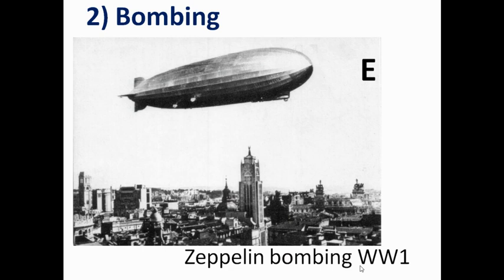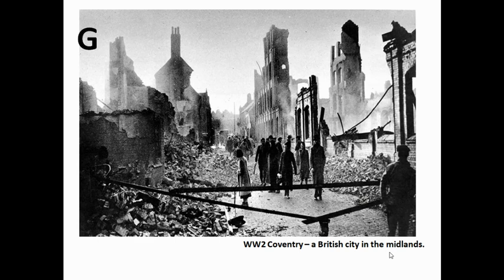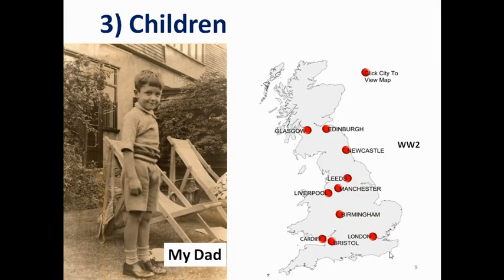The second area is bombing. In World War One, aircraft couldn't make it across the English Channel to bomb Britain, but there were approximately 51 Zeppelin raids. By World War Two, the technology had moved on significantly — all major cities in Britain were targeted, as well as ports like Portsmouth and Southampton where ships were being made. There were lots and lots of air raids in World War Two. Here is an example in Coventry, which we looked at in a previous lesson — as you can see, it was totally devastated.